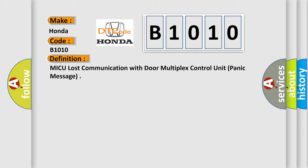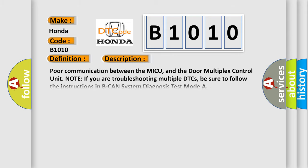And now this is a short description of this DTC code. Poor communication between the MICU and the door multiplex control unit. Note if you are troubleshooting multiple DTCs, be sure to follow the instructions in BCAN system diagnosis test mode A.